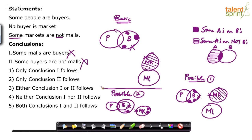The moment all buyers become malls, 'some buyers are not malls' becomes false. Conclusion 2 satisfies the basic diagram and possible diagram 1, but it does not satisfy possible diagram 2. A conclusion is a definite conclusion only if it satisfies all the diagrams. Conclusion 1 doesn't satisfy the basic diagram; conclusion 2 doesn't satisfy one of the possible diagrams. So neither one nor two follows — option 4 is the answer.